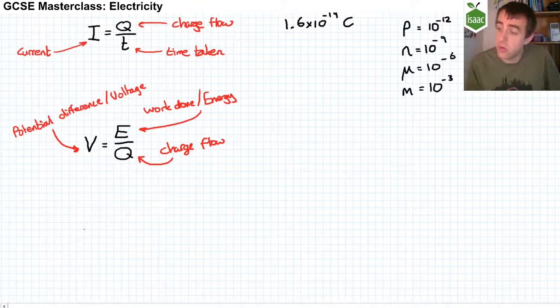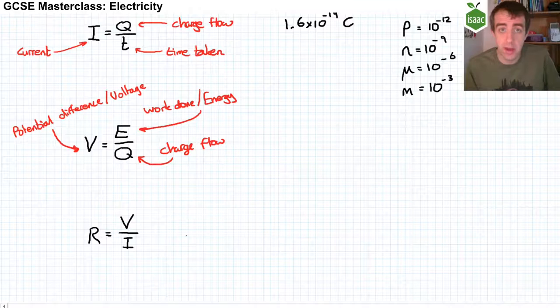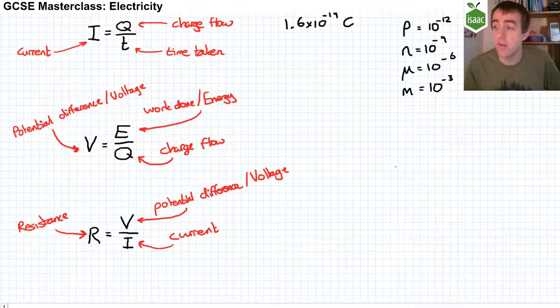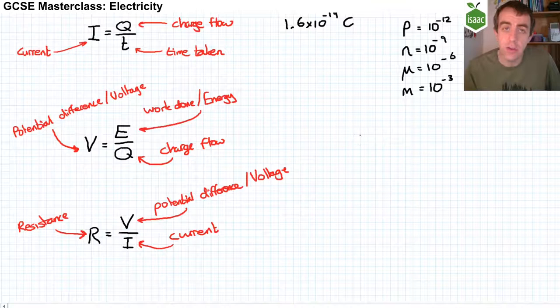The third equation you will need is the definition of resistance — and you'll notice these are all definitions. The resistance of a component is equal to the potential difference across that component divided by the current that can flow through that component. The larger the resistance for a given potential difference, the smaller the current of charge that can flow through. A resistance of one ohm is the resistance that allows one ampere of current to flow through a component when there is one volt of potential difference across it.